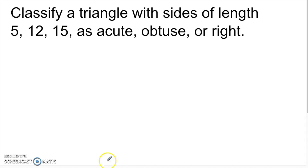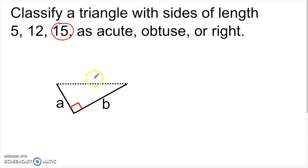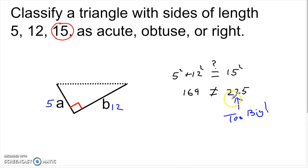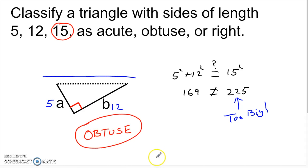One final example: classify a triangle with sides 5, 12, and 15. We already know 5 squared plus 12 squared is 169. C is 15, the largest side. Does 169 equal 15 squared? 15 squared is 225. Those are definitely not equal — that largest side is way too big. I only needed 169 but got 225. The only way to get a triangle is to open this angle up and create an obtuse angle, giving me an obtuse triangle.